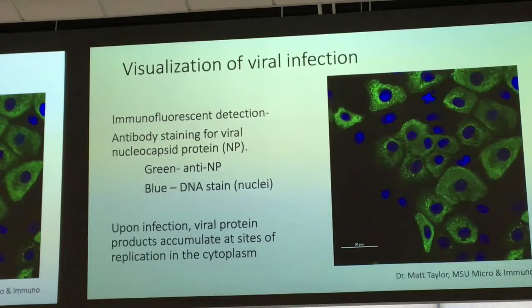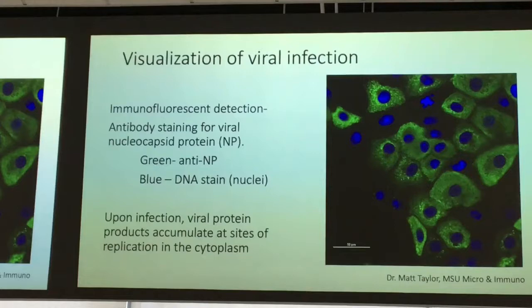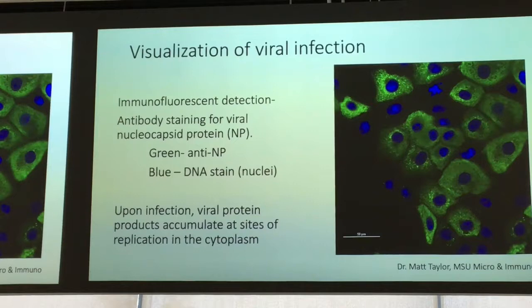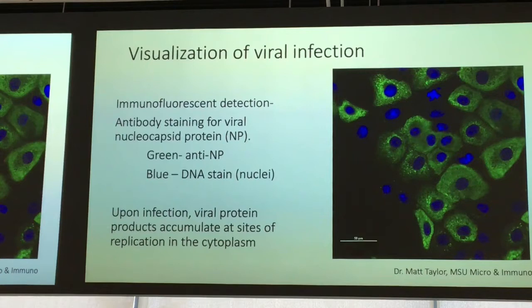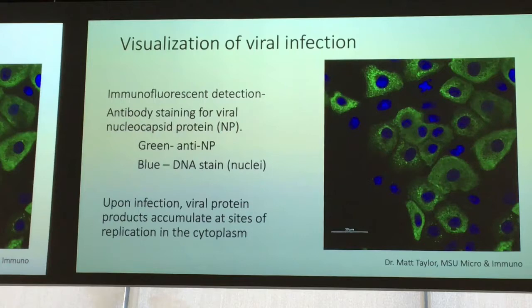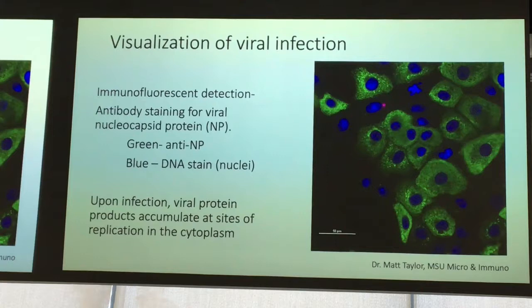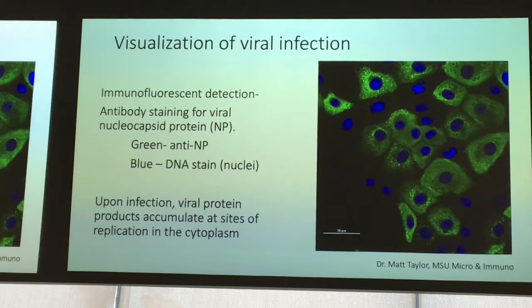You can also visualize using immunofluorescence — this is a beautiful image from Dr. Matt Taylor, a herpes virologist here on campus who switched to this virus when COVID hit. You can see cells using immunofluorescence detection where antibodies attach onto the nucleocapsid protein — the outside shell of the virus. The antibodies are green. Really green cells have a lot of virus. The blue is the nucleus — cells with blue nuclei that aren't very green are not infected. You can actually see viruses accumulating within these cells.